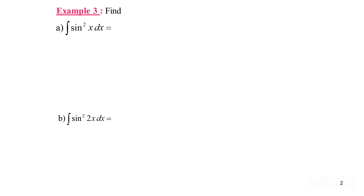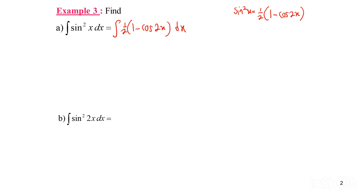Example 3: find the integration of sin squared AX dx. The function is sin squared, so we need to apply the double angle formula. Sin squared AX is equal to 1/2 times (1 minus cos 2X). We substitute into the question and get the integral of 1/2 times (1 minus cos 2X) dx. We have 2 terms to integrate here.